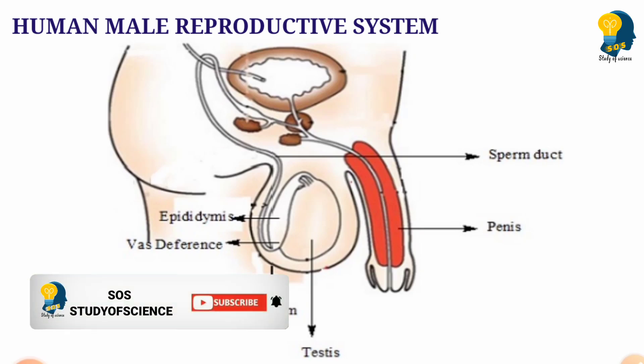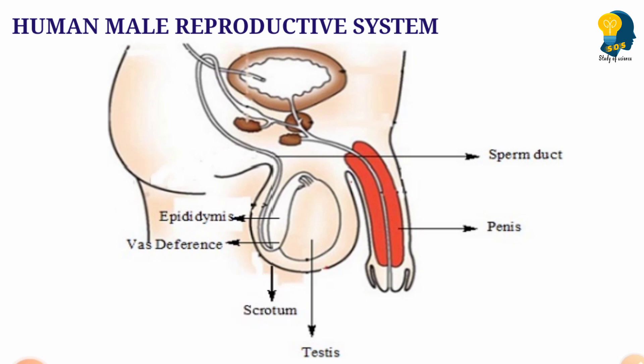Welcome back to my class. In this session, you'll understand the entire structure of the human male reproductive organ, the various parts and their functions, how sperms are produced, and what helps sperms enter the human female reproductive organ. These are the highlights of this session, so let's begin.